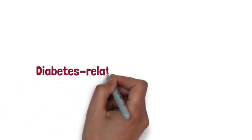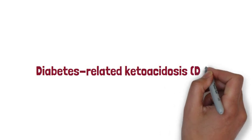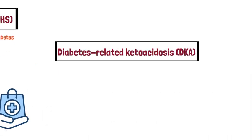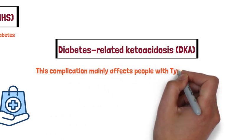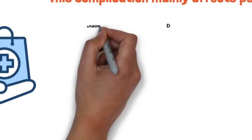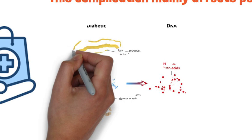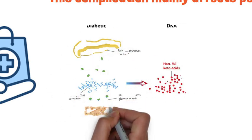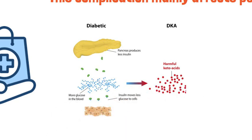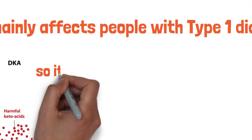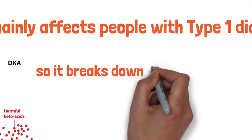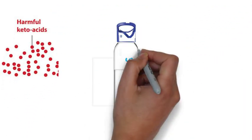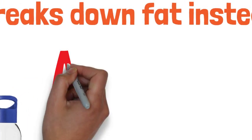The second acute diabetes complication is diabetic ketoacidosis. This complication mainly affects people with type 1 diabetes. It happens when your body does not have enough insulin. Without enough insulin, your body cannot use glucose for energy, so it breaks down fats instead. This process releases substances called ketones, which turn your blood acidic.